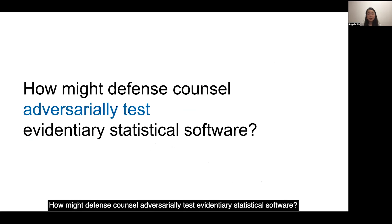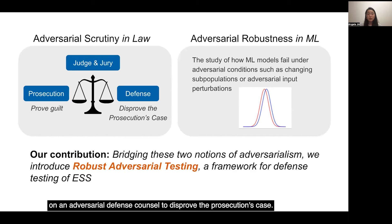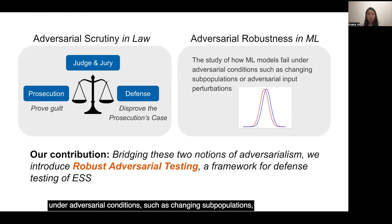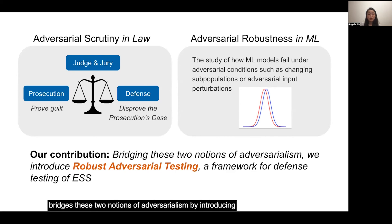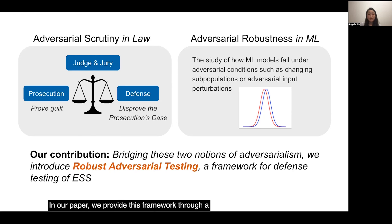To tackle this issue, we ask: how might defense counsel adversarially test evidentiary statistical software? The U.S. relies on an adversarial defense counsel to disprove the prosecution's case — we call this duty adversarial scrutiny. We see similar notions of adversarialism in the robust machine learning community. Adversarial robustness in ML is the study of how ML models fail under adversarial conditions such as changing subpopulations or adversarial input perturbations. Our contribution bridges these two notions of adversarialism by introducing robust adversarial testing, a framework for defense testing of evidentiary statistical software. In our paper, we provide this framework through a formal definition and its operationalization for defense use.